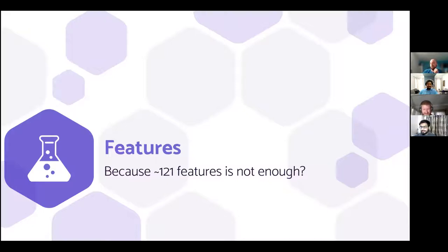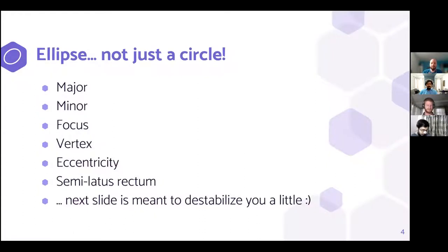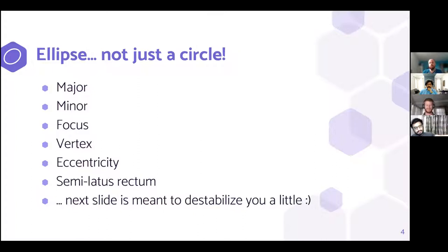The competition gave us a lot of features to work with from the beginning, but 121 was not enough. One section of features you could work with is everything related to ellipses — it's not just a circle. I learned a lot about ellipses in this competition. What hit me were the variables major and minor that we were provided. There are plenty of other indicators you could come up with — technical terms such as focus, vertex, eccentricity, and semi-latus rectum.